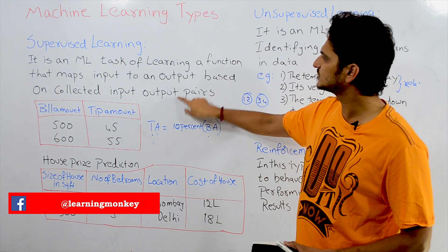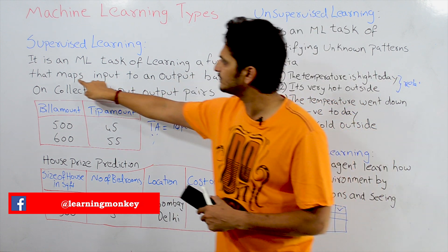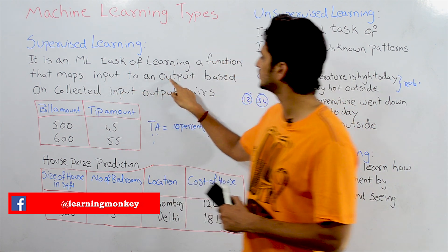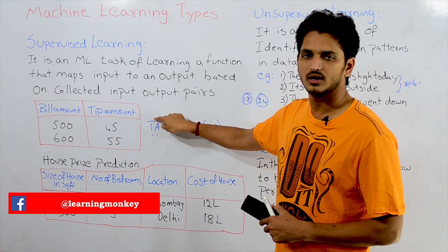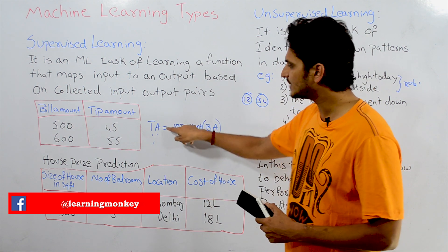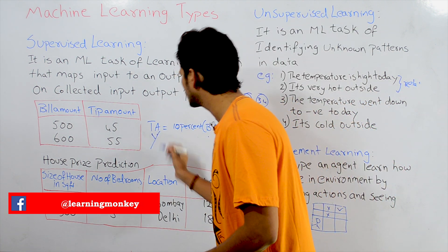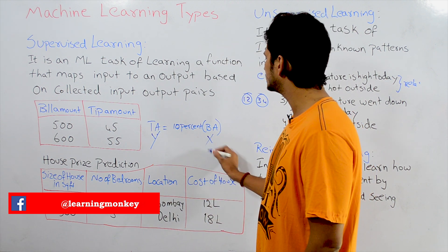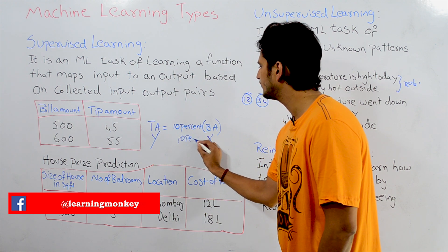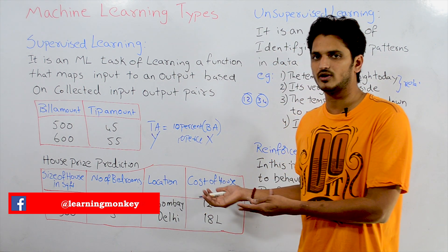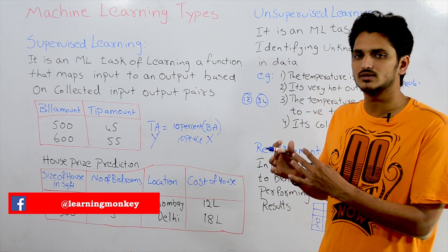Based on the collected input-output pairs, we identify a mathematical function. This function maps input to an output. Our input is bill amount, mapping to tip amount as output. Let tip amount equal y and bill amount equal x, so y = 10% of x, which is a mathematical function. This type of problem comes under supervised learning.